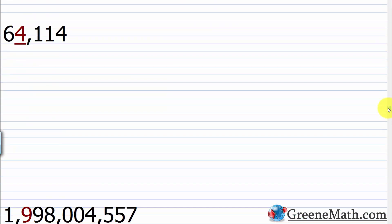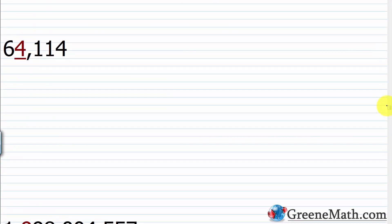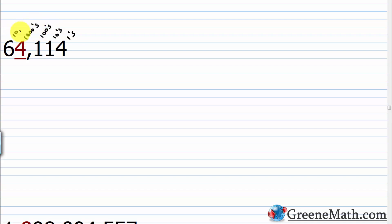For 64,114 with the 4 underlined: start at the rightmost digit in the ones, then moving left — tens, hundreds, thousands, ten-thousands. The underlined 4 is in the thousands place.